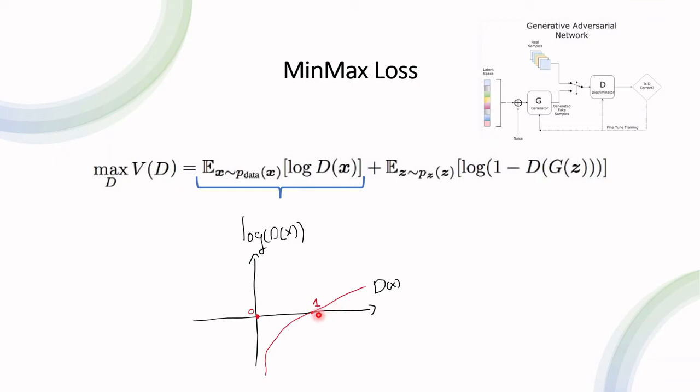The log can technically go above one, but we're only interested in values between zero and one. And we can see that the maximum value over here is when d of x is equal to one. Again, that's why we want to maximize it.